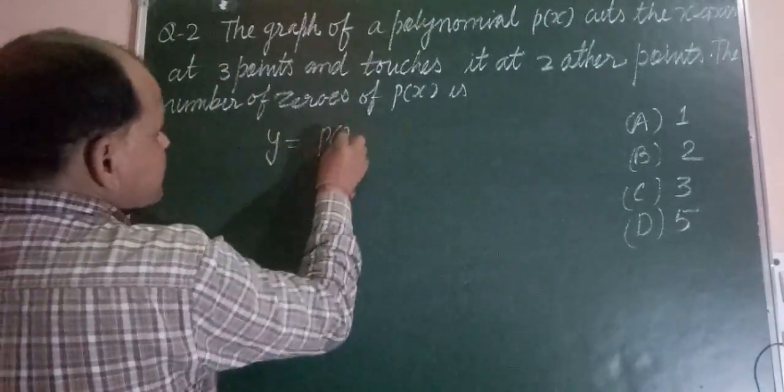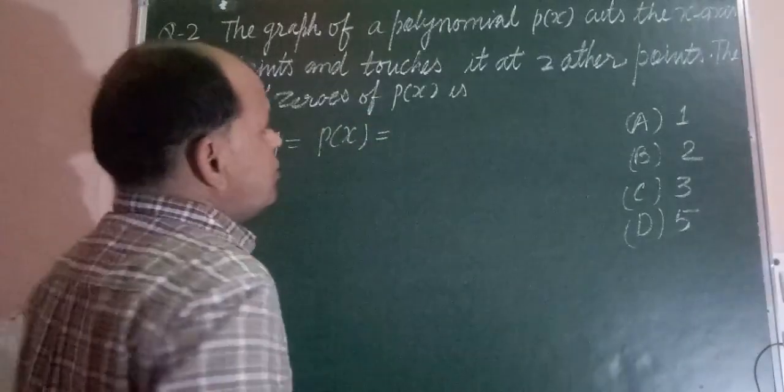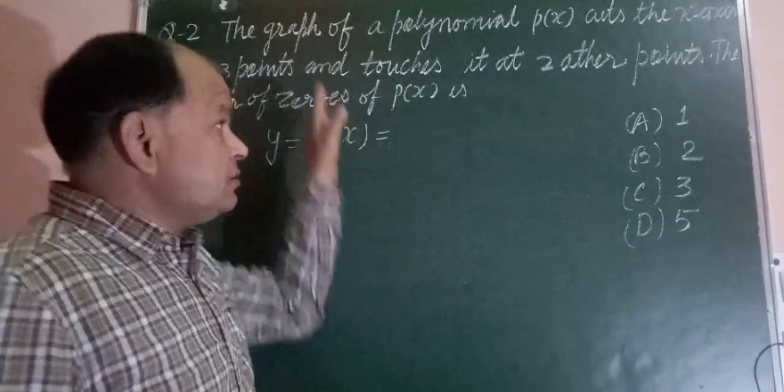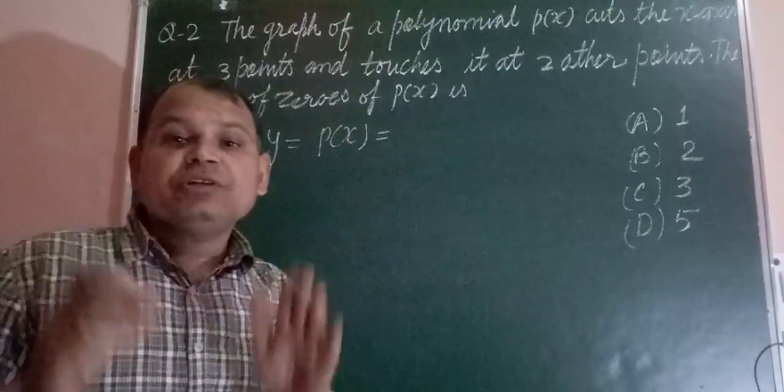So, y = P(x) is a polynomial which is cutting the graph at 3 points and also touching the graph at 2 points.